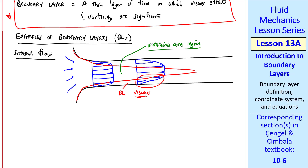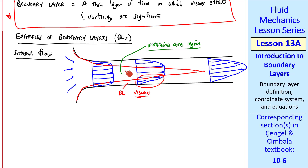Inside the boundary layer, the flow is very viscous. The boundary layer grows downstream, and eventually the boundary layer from all around the walls merges, giving us fully developed pipe flow. Notice that the speed in the irrotational core keeps increasing as the boundary layer thickness increases. This is because the boundary layer doesn't carry its share of the flow, and therefore the flow in the irrotational core must increase to conserve mass.